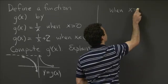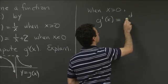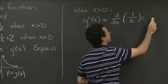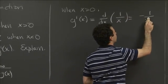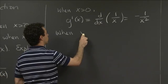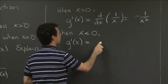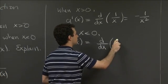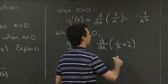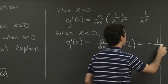When x is greater than 0, g prime of x is d/dx of 1 over x. That's something we're familiar with — it's minus 1 over x squared. When x is less than 0, g prime of x is d/dx of (1 over x plus 2), because that's what g of x is. The plus 2 gets killed, so we again get the derivative of 1 over x, which is minus 1 over x squared.